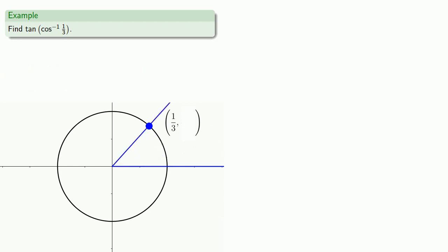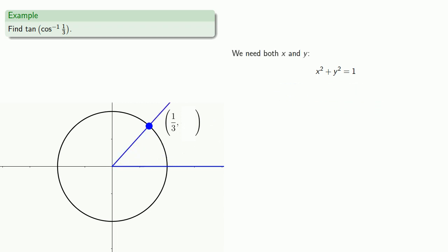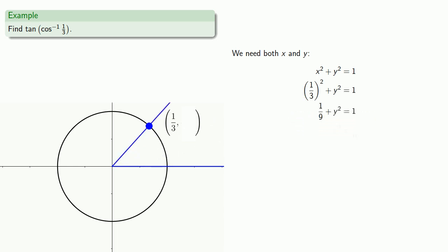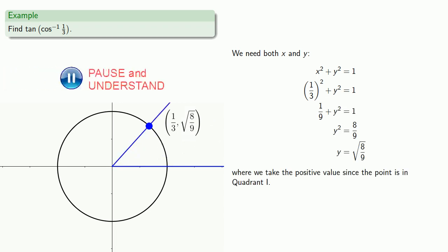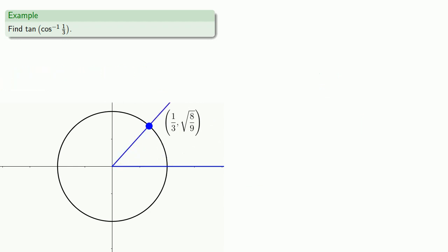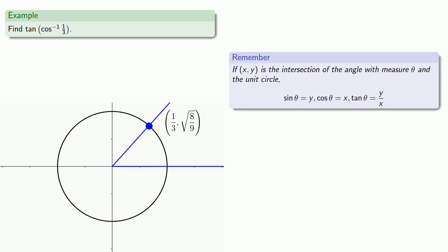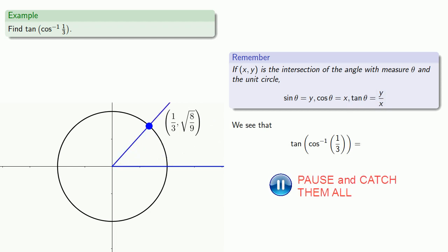Since this is the unit circle, we know that every point satisfies the equation x squared plus y squared equals 1. We need both x and y — we have our x value, so we can solve for y. We take the positive value since our point is in quadrant 1. Our tangent is going to be y divided by x, and we know both y and x, so we see that the tangent of the inverse cosine will be a value which we can simplify.